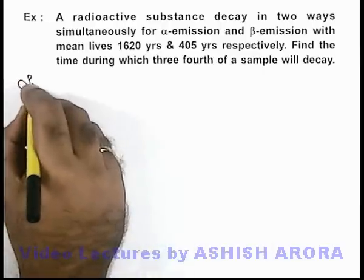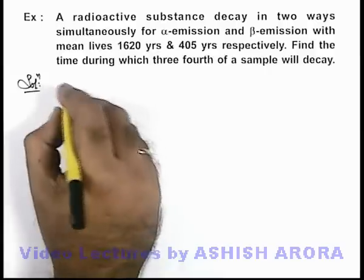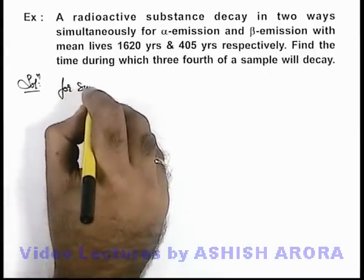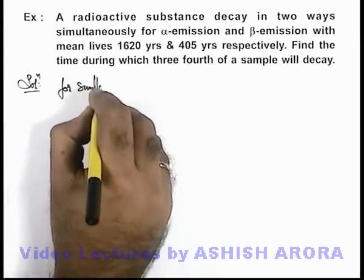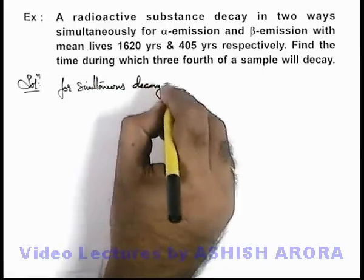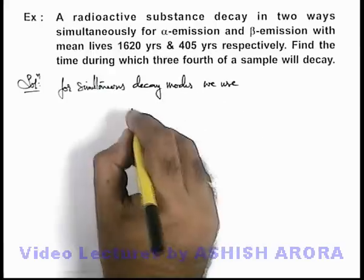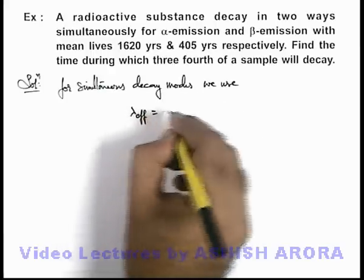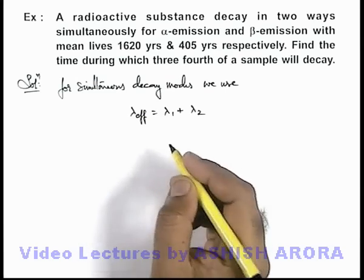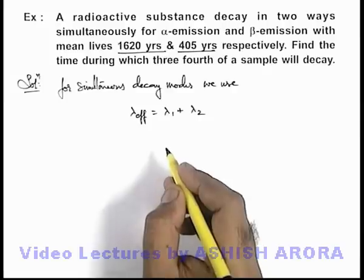In this situation we can use the concept of simultaneous decay modes. For simultaneous decay modes, we write that the effective decay constant for the element is lambda effective equals lambda 1 plus lambda 2, if it is decaying simultaneously into 2 different daughter nuclei.